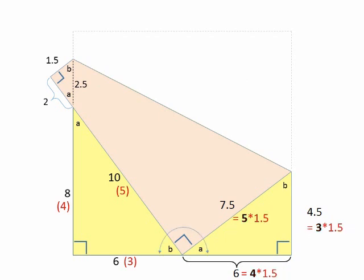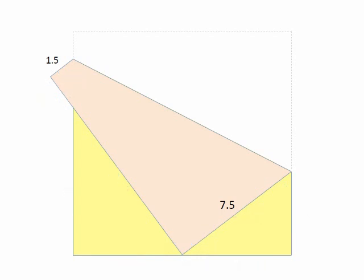So now we know that the two lengths on the sides of our trapezoid are 1.5 and 7.5. And we know that the base is 12. So we are now ready to calculate the area of the trapezoid.